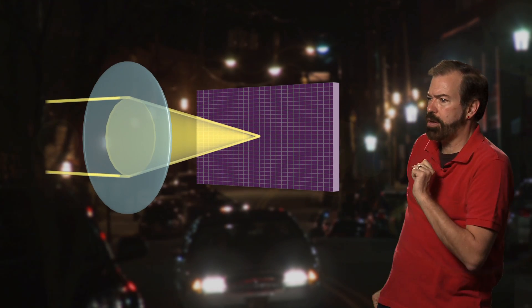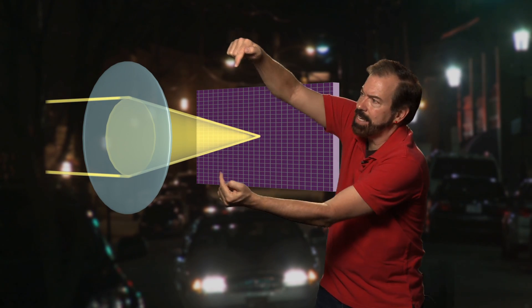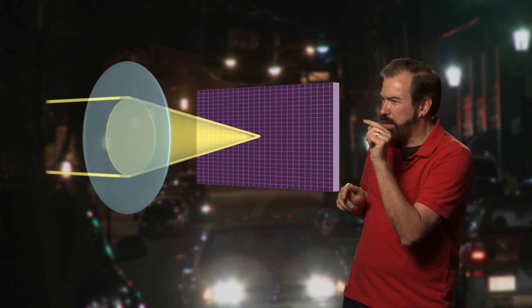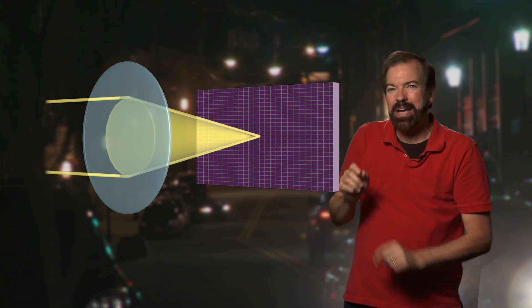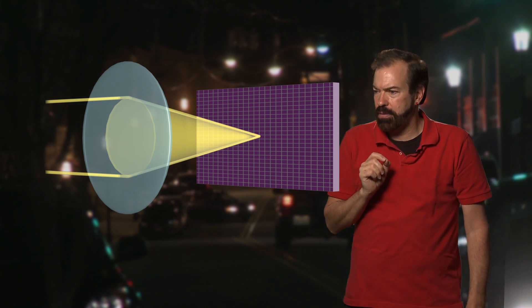Looking at this a little bit more three-dimensionally, you can see these lines actually define the edges of a cone of light. When the point of that cone is on the surface of the focal plane, it makes a dot that's as small as it can be.